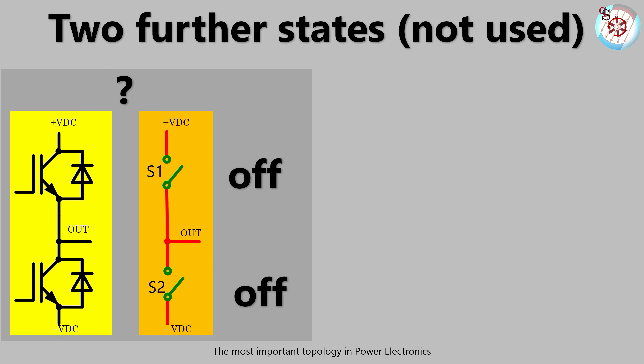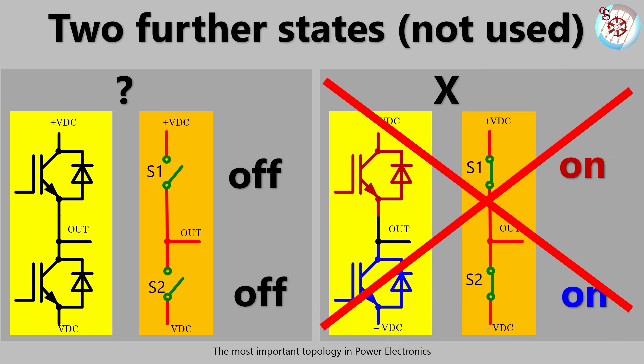What happens if we turn both switches off? This is the question mark state, which I refer to as passive 0. Basically it's the inverter disconnected from out. The last thinkable state is the X state. It is forbidden. I'm sure you'll find out why.